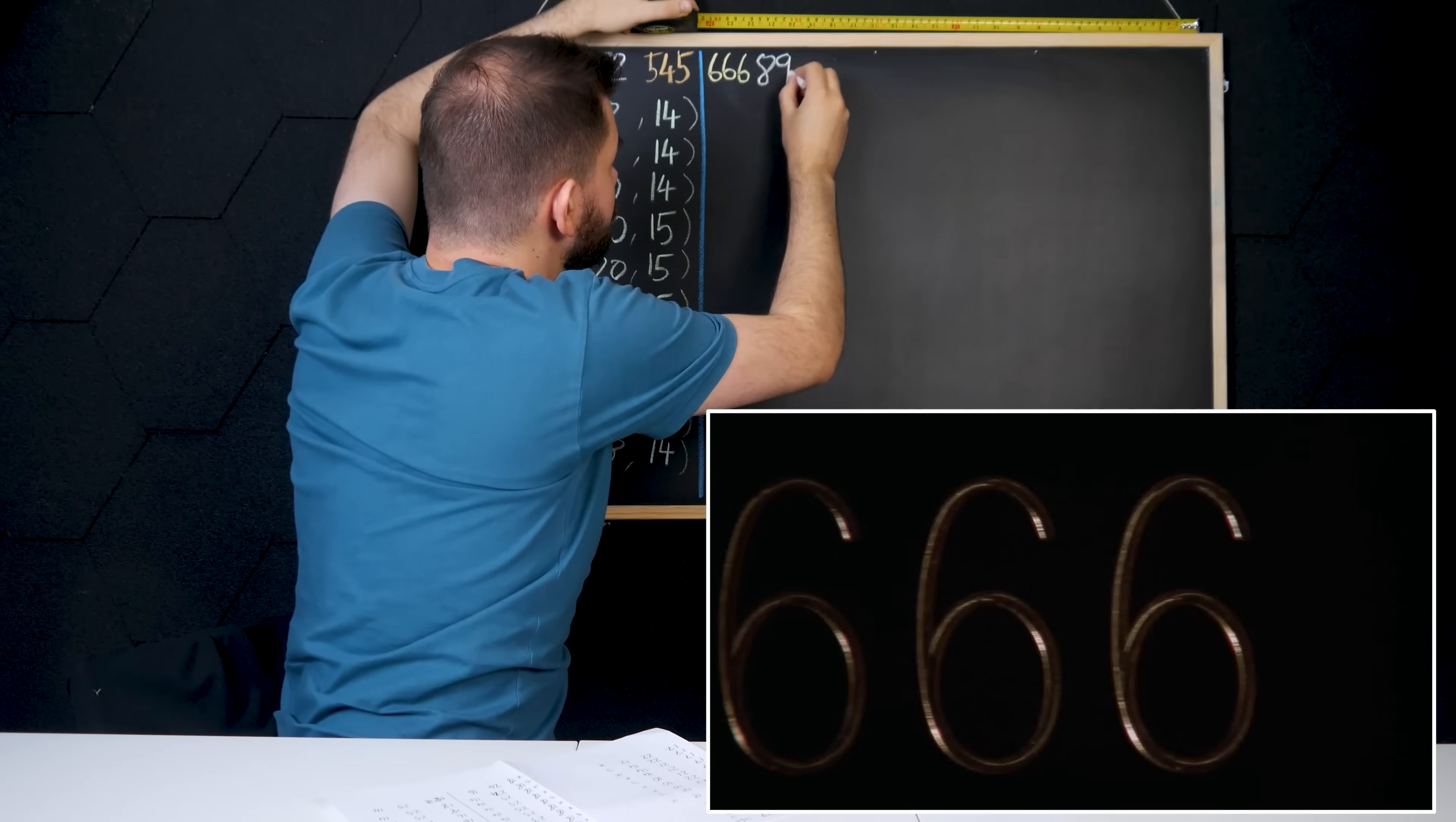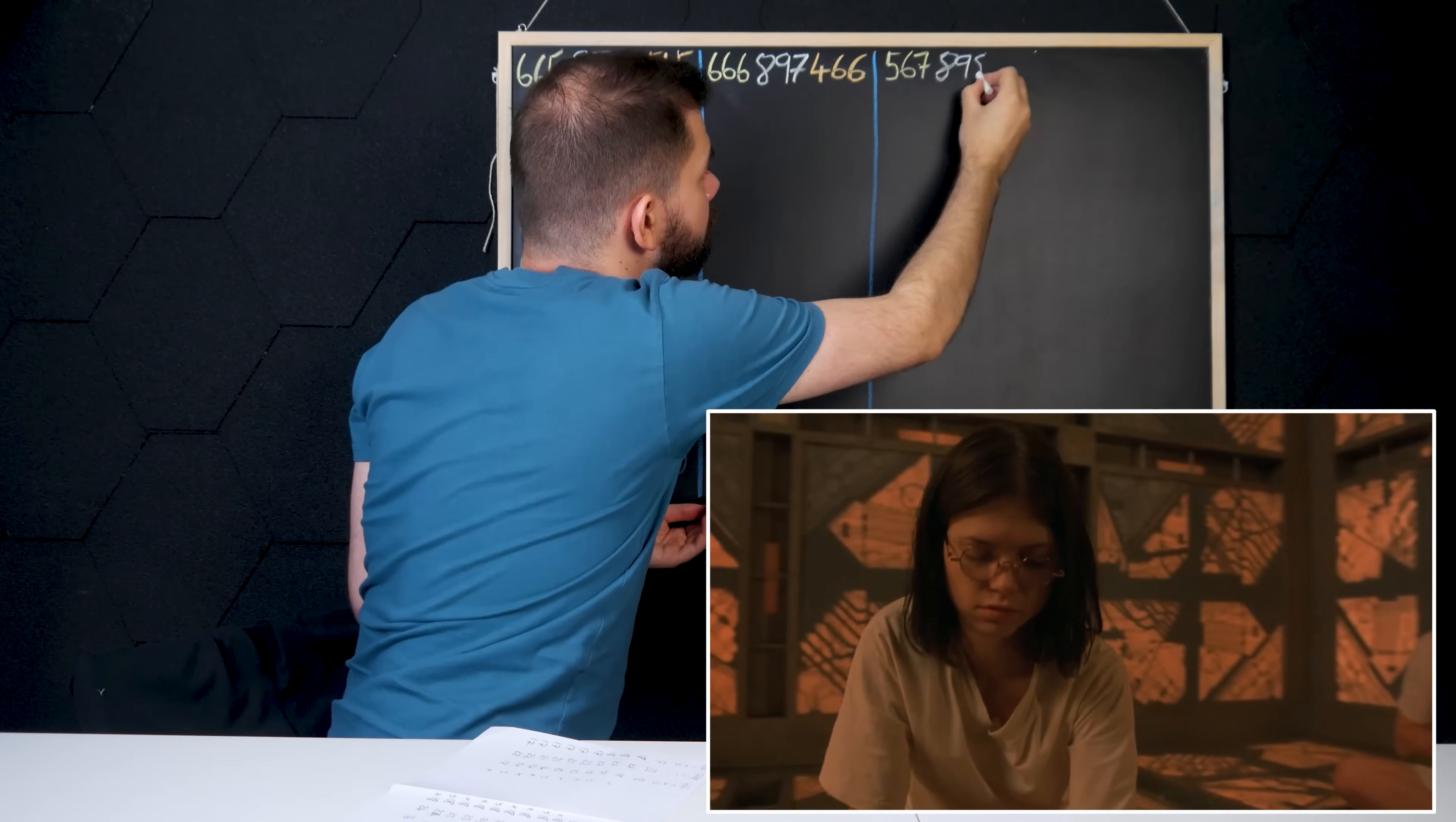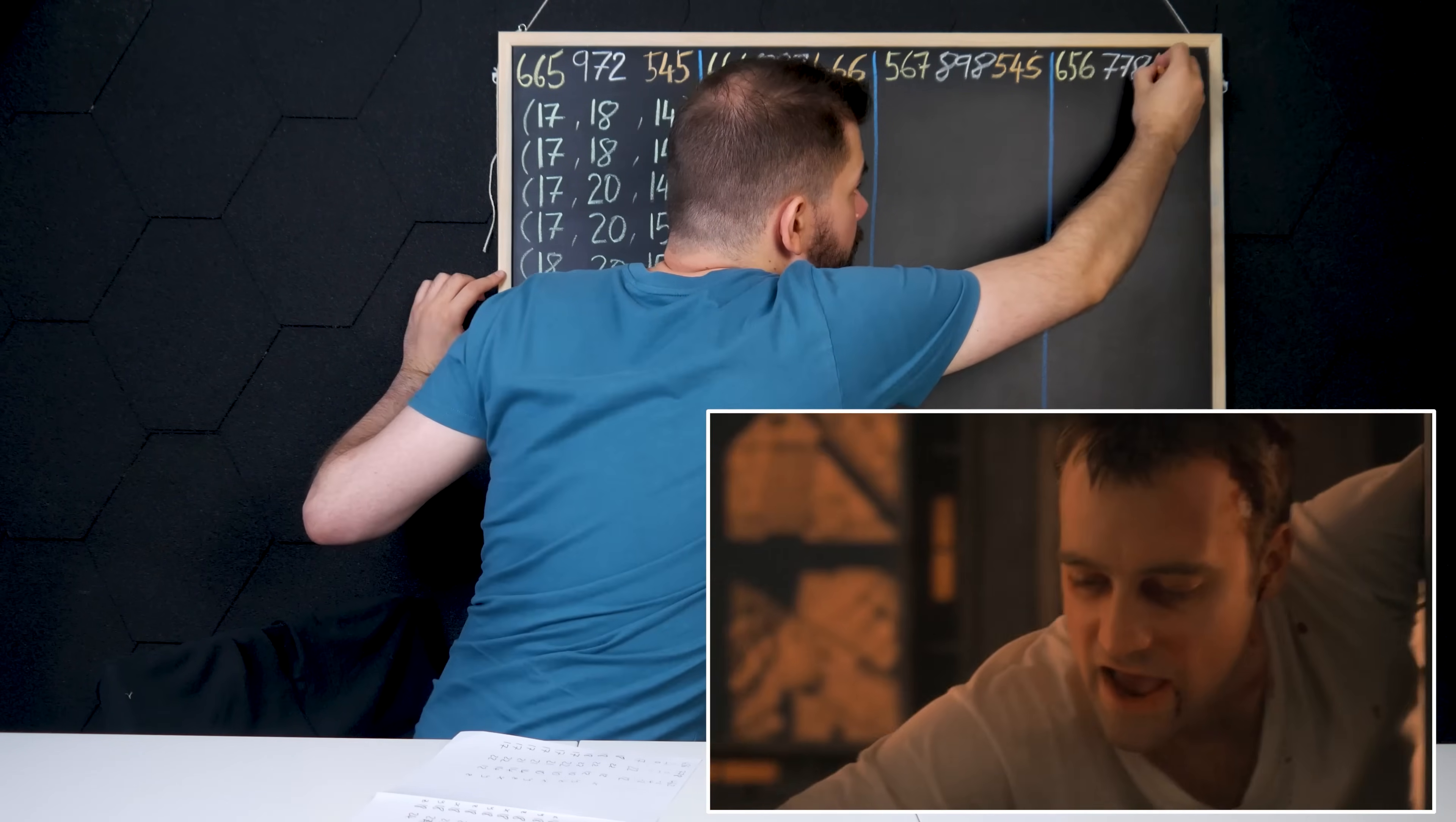So they know that they are in one of these 9 positions, but there's no way to know which one, because they don't know how many shifts there have been since the initial position. But then Levin asks for the numbers of the adjacent rooms. 6, 6, 6, 8, 9, 7, 4, 6, 6. 5, 6, 7, 8, 9, 8, 5, 4, 5. 6, 5, 6, 7, 7, 8, 4, 6, 2.